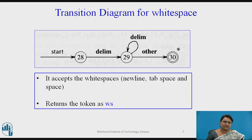For white space, there is a transition diagram that simply reads newline, tab, spaces, and similar characters, and returns 'ws' as a token.